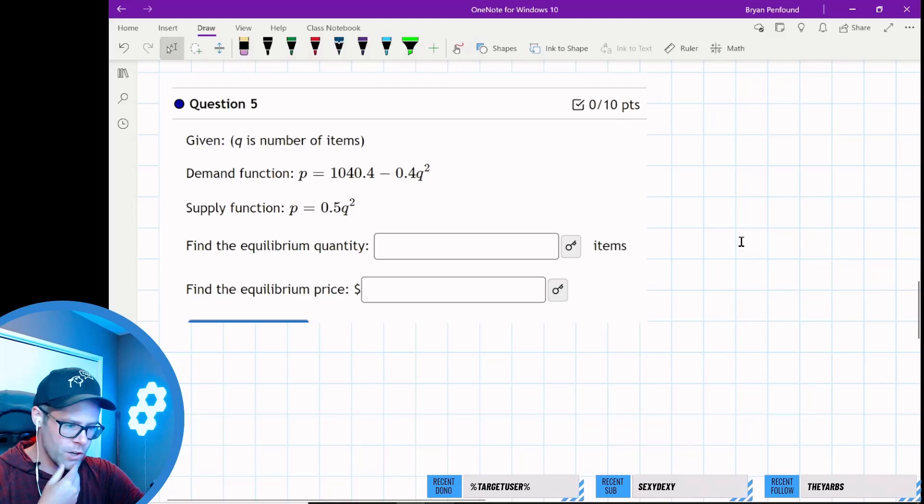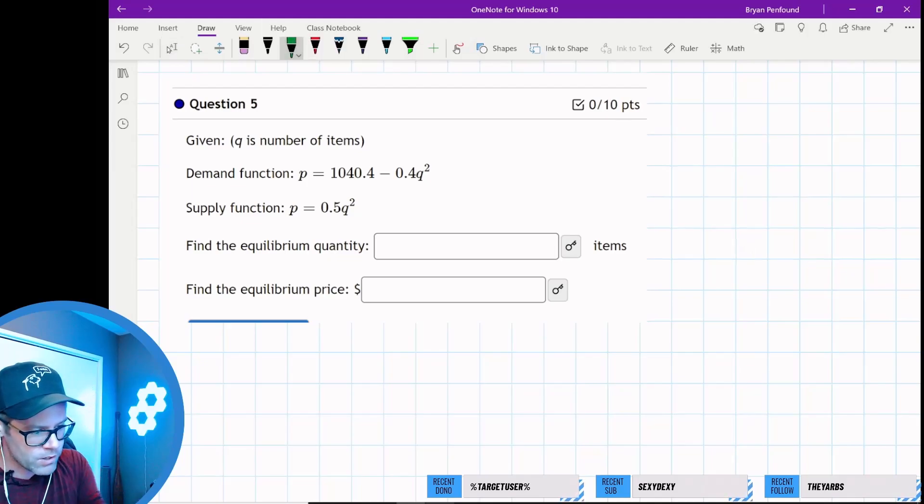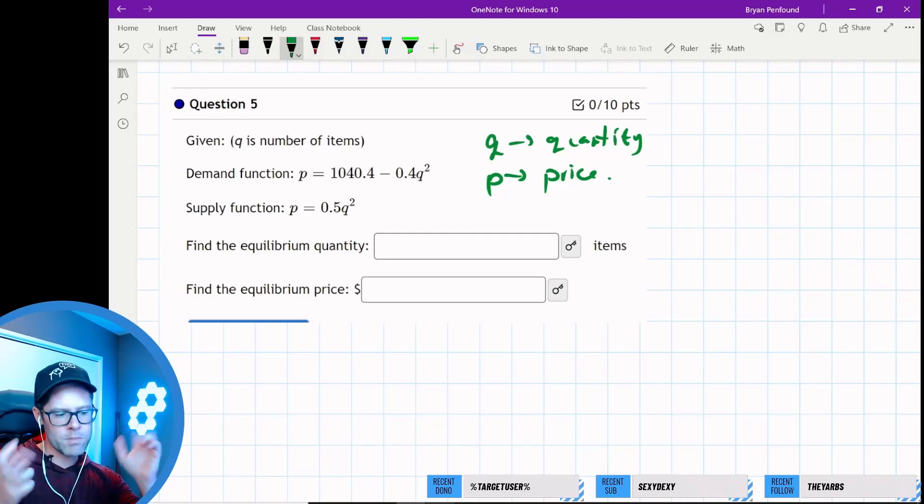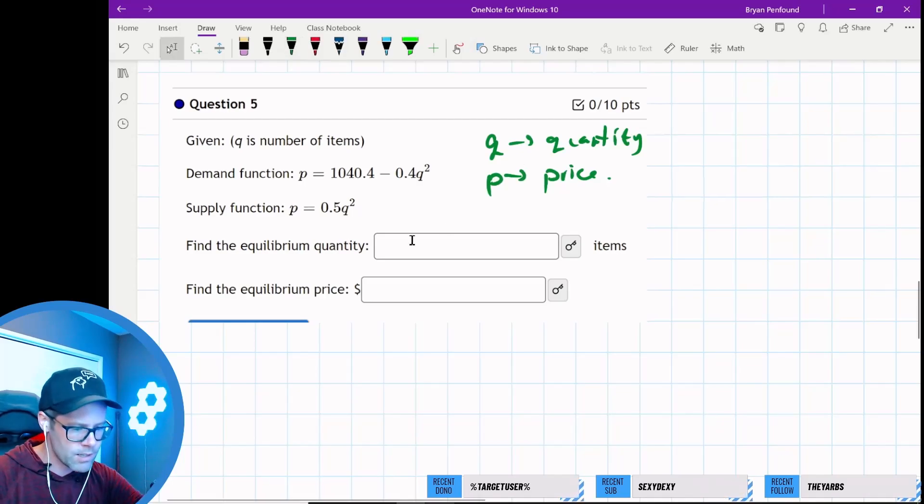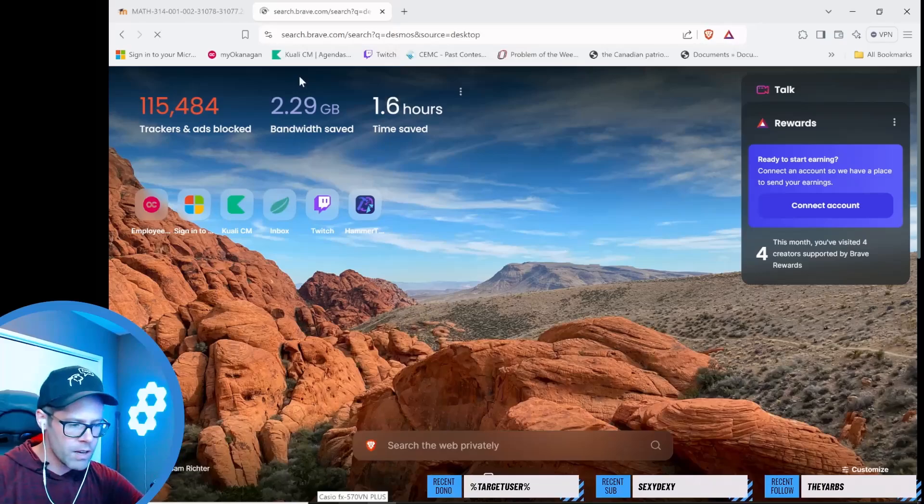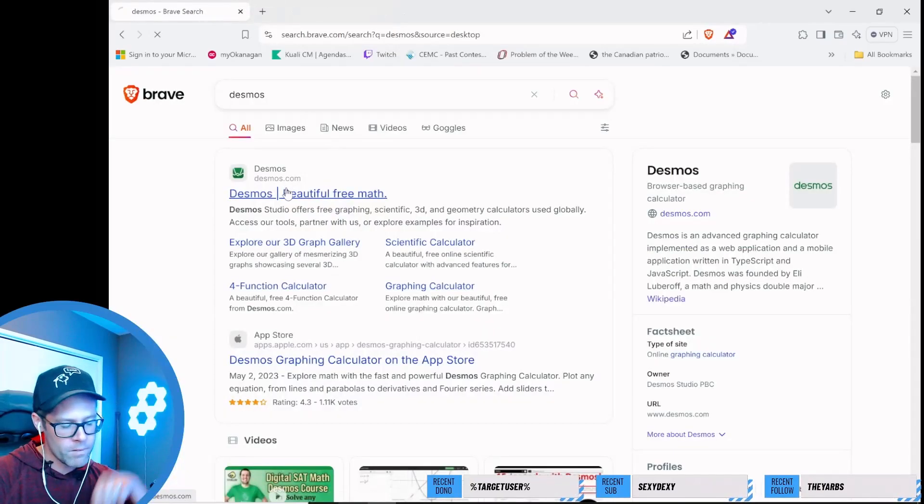Question 5: q is the number of items—the quantity. I also believe p stands for the price. We're looking at supply-demand economics. We have a quadratic equation representing demand and a quadratic equation representing supply. We could plot these and get a sense of what they look like using Desmos.